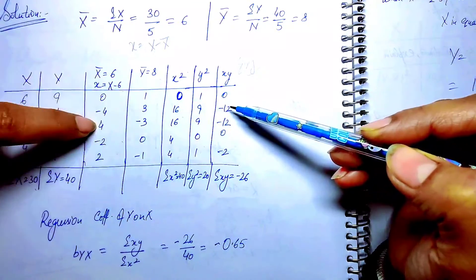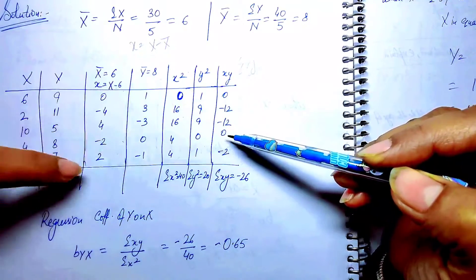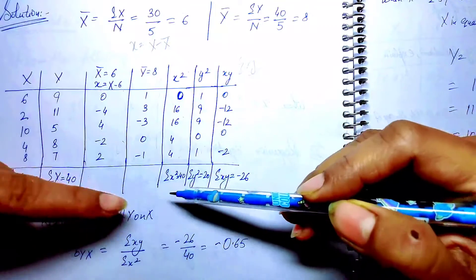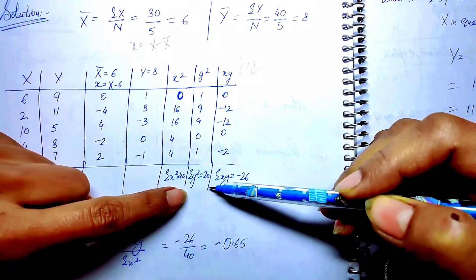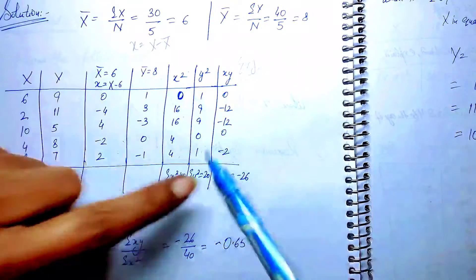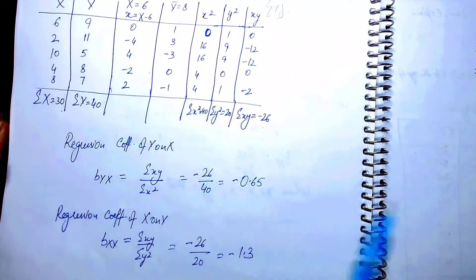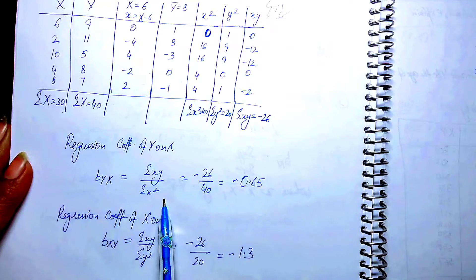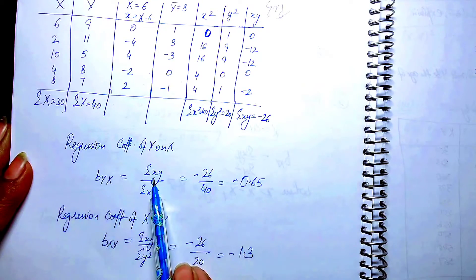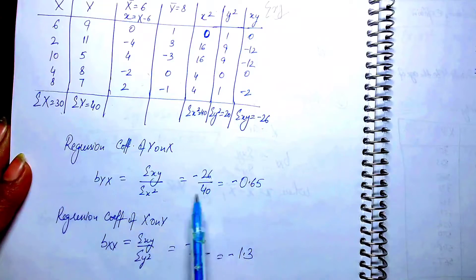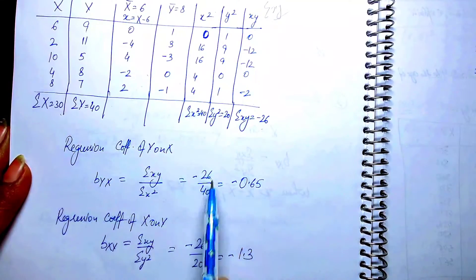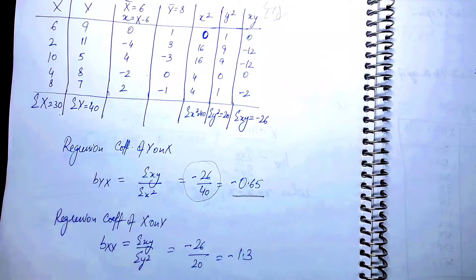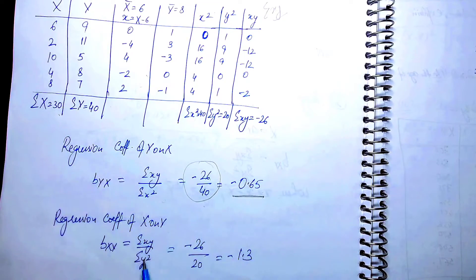From the table, the values are: x: 0, 4, -3, 2, -1 and xy: 0, -4, -3, -2, 0, giving us summation(xy) = -26, summation(x²) = 40. So the coefficient b_yx = summation(xy) divided by summation(x²) = -26 divided by 40 = -0.65.